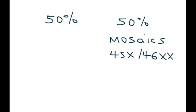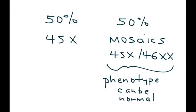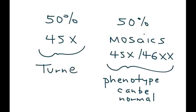In mosaic patients, their phenotype can be normal. However, if you have a classic Turner Syndrome genotype of 45X, this is what results in the Turner phenotype.